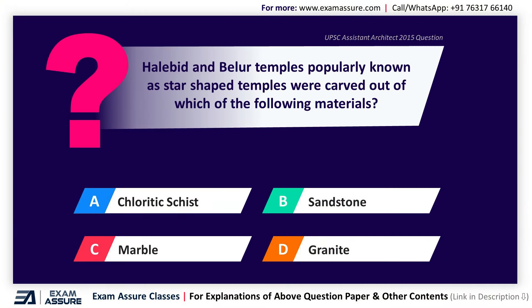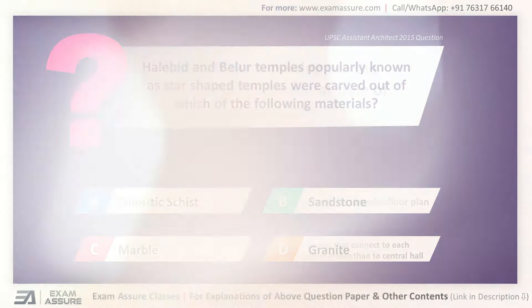Next question. Halebidu and Belur temples, popularly known as star-shaped temples, were carved out of which of the following materials? Option A: Chloritic schist, Option B: Sandstone, Option C: Marble, Option D: Granite. The correct answer is Option A, Chloritic schist.